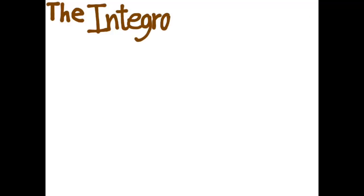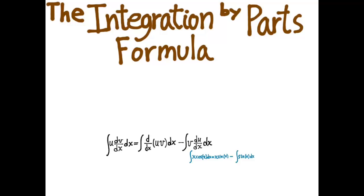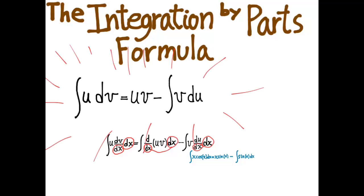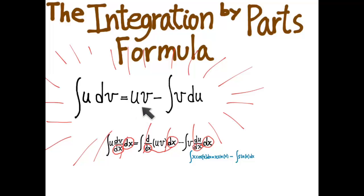Now we're one step away from the actual formula for integration by parts. We were at the integral of u·(dv/dx)·dx. The next step is to cancel out those dx's, which brings us to the integration by parts formula: the integral of u dv equals uv minus the integral of v du. I used the trick that integrating a derivative gives back the function — that's the fundamental theorem of calculus.